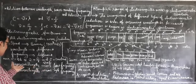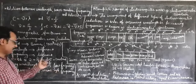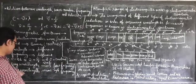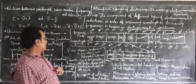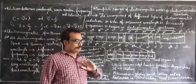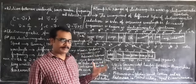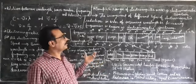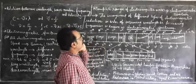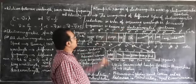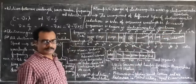So, radiation having long wavelength will have low frequency, and radiation having short wavelength will have high frequency. When all electromagnetic waves are arranged in a certain order of wavelength and frequency, you get the complete range of electromagnetic waves, which is known as the electromagnetic spectrum.